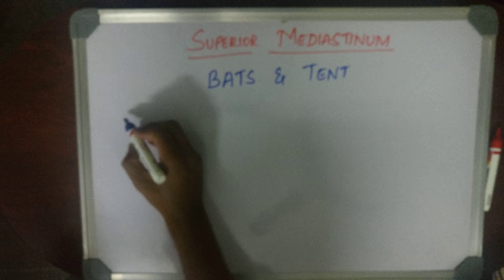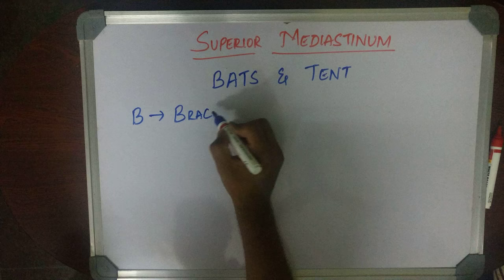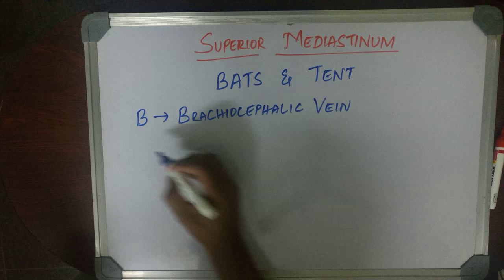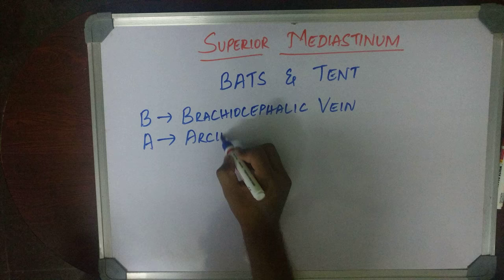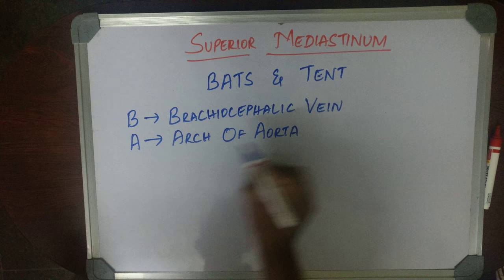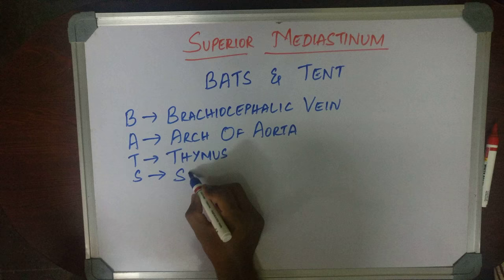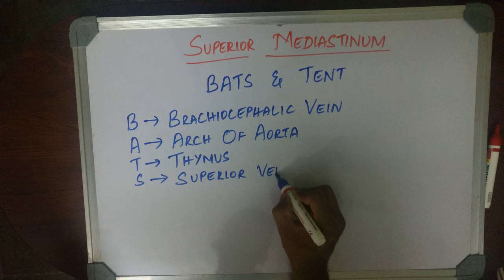What is B? B is Brachiocephalic Vein. What is A? A is Arch of Aorta. T is Thymus. S is Superior Vena Cava.